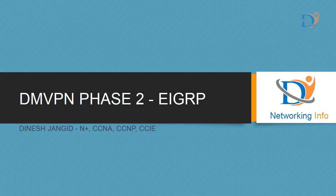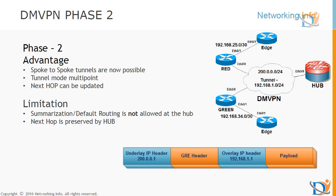In this session we configure EIGRP in DmVPN Phase 2. In DmVPN Phase 1 we had limitations like no direct spoke-to-spoke tunnel and the next-hop was always updated by the hub. In DmVPN Phase 2 we can have direct spoke-to-spoke tunnels, though the next-hop is still updated by the hub. For this we define TunnelModeMultipoint on all devices — no static entries are needed, and all spokes can communicate directly.